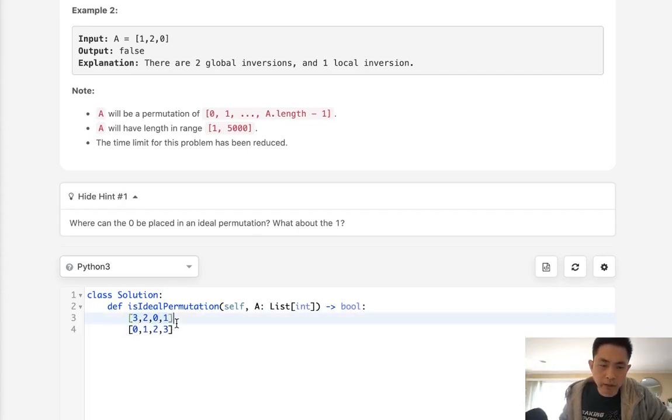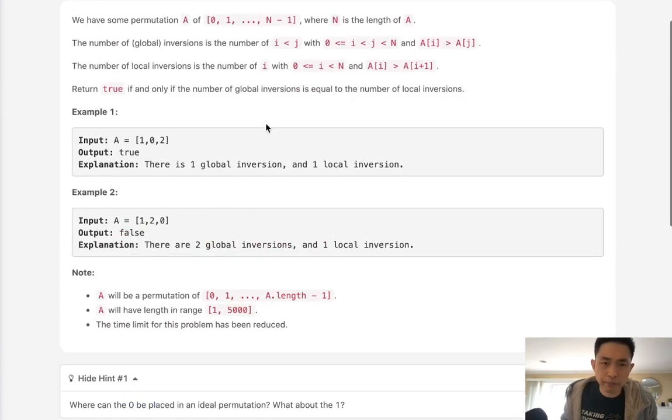because while we're going through we basically have to remember all the different numbers that we already seen. So we need to rephrase this problem here rather than thinking about how do we count up the global inversions. Really the question is return true if global inversions and local inversions are the same right.